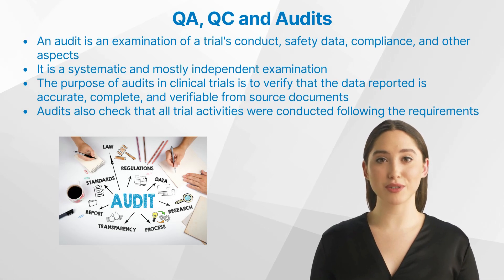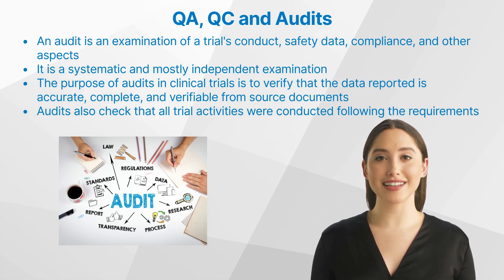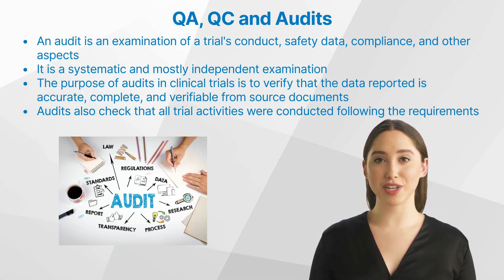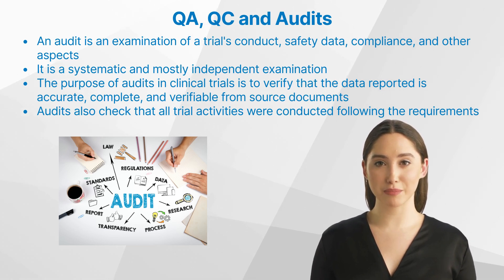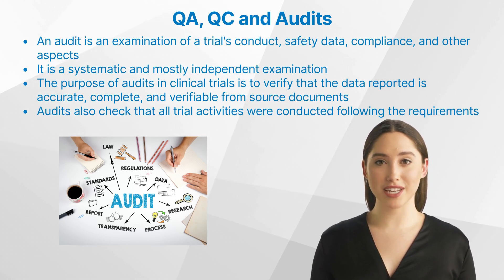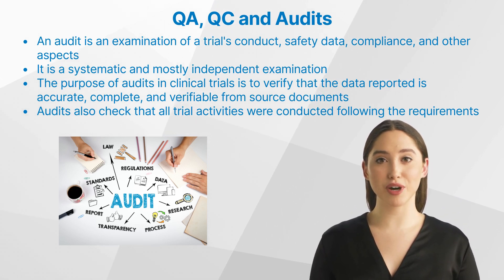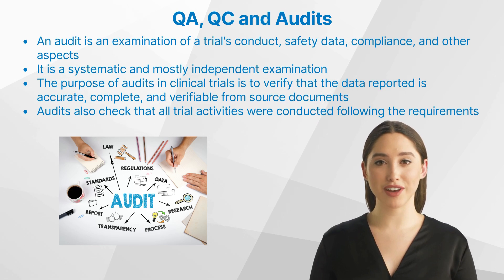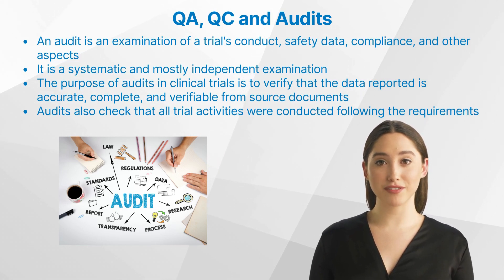But what about audits in clinical trials? An audit is an examination of a trial's conduct, safety data, compliance, and other aspects. It is a systematic and mostly independent examination to determine whether activities and related results comply with planned arrangements and whether these arrangements are implemented effectively. The purpose of audits in clinical trials is to verify that the data reported is accurate, complete, and verifiable from source documents. Audits also check that all trial activities were conducted following the approved protocol, good clinical practice, and applicable regulatory requirements. Audits relate to quality assurance and quality control as they are part of the overall quality management system. While quality assurance and quality control focus on preventing and identifying defects or errors during the trial, audits provide an additional layer of assurance by independently verifying the trial's integrity.